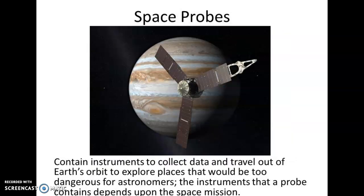Space probes contain instruments to collect data and travel outside of Earth's orbit to explore places that would be too dangerous for astronomers. The instruments a probe carries depend on its space mission — a space probe is used where it's not safe to send an astronaut. Space probes travel outside of Earth's atmosphere, and a good example is the Mars rover.